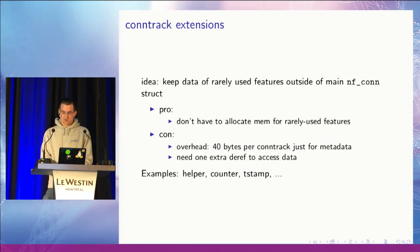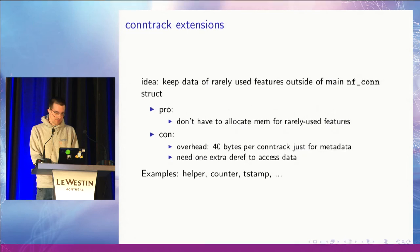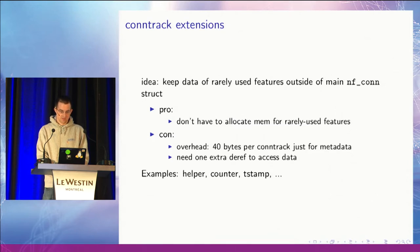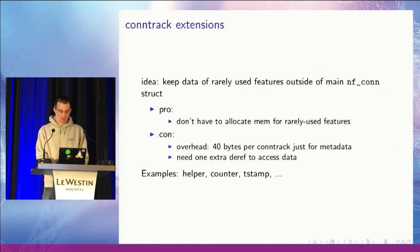Because we have a lot of features in conntrack — like events, byte accounting, timestamps, and connection tracking helpers — the conntrack entry would be pretty big. That's why we have a thing called extensions, which allows us to offload rarely used stuff into an external blob that is linked from the conntrack entry. The good side is we save a lot of memory for common setups that don't use these features, but we take some overhead because we have metadata that checks what extensions are allocated and we need one extra dereference to obtain the extension data.